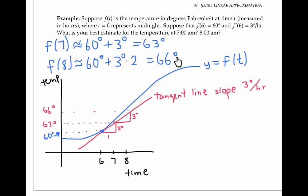When making these estimates, we were actually using the tangent line to approximate our function. Our actual temperature function may be rising more steeply than the tangent line, or it possibly could be rising less steeply, like in this picture. But either way, the tangent line is a good approximation for our function when time is near six o'clock. The idea of approximating a function with its tangent line is a very important idea that works for any differentiable function.